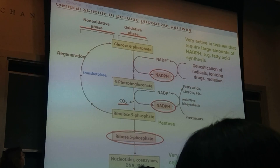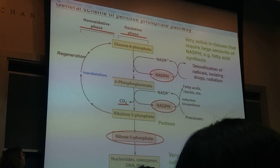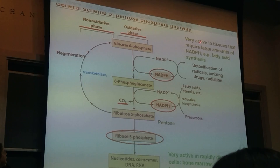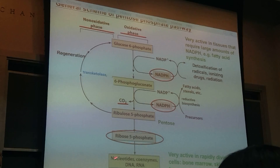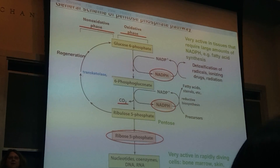This pathway is very active in tissues that require large amounts of NADPH. Here's the pentose phosphate pathway: you take glucose-6-phosphate and then you can either go all the way down to ribose-5-phosphate, or to nucleotides, coenzymes, DNA, and RNA. One reason we have this is that if you have really actively dividing cells, you need a lot of nucleotides — DNA and RNA — to make DNA and RNA, and also to make coenzymes. This could be in bone marrow, in skin which turns over rapidly, and also in tumor cells.